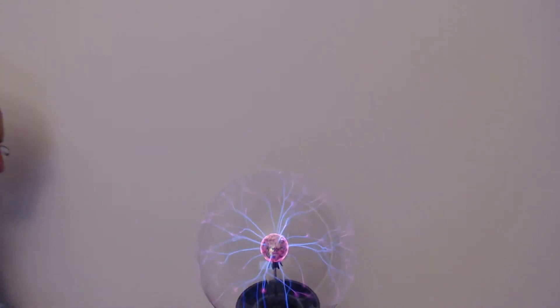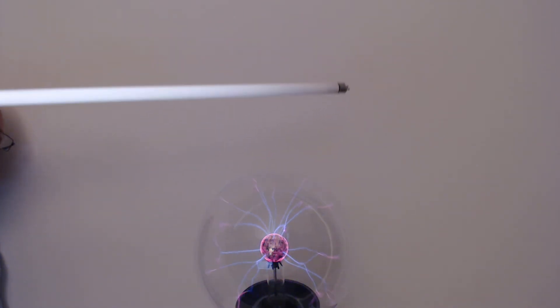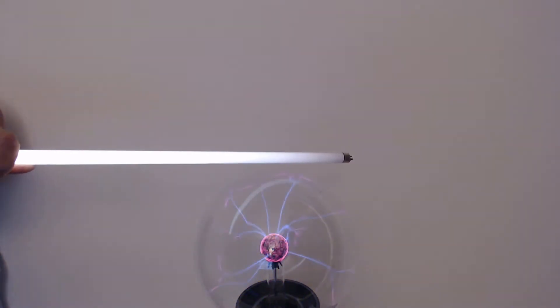And let's repeat that with a strip light. And just like the fluorescent lamp, this one lights up when you're close to the globe. Moving it away, it eventually goes out, in again, it glows, out, it goes off.